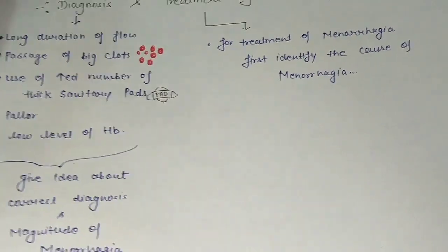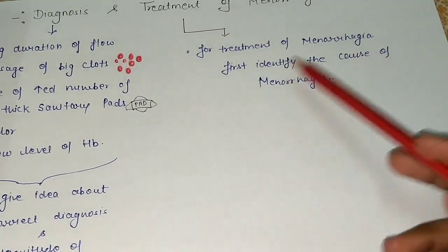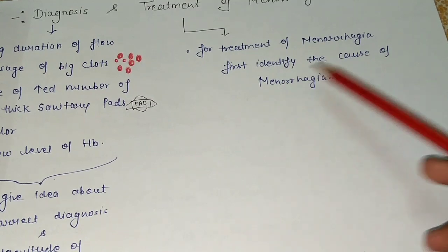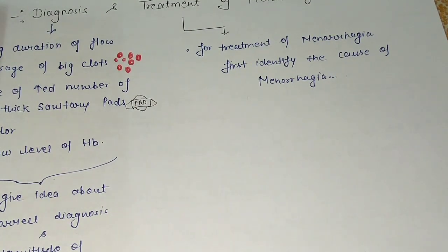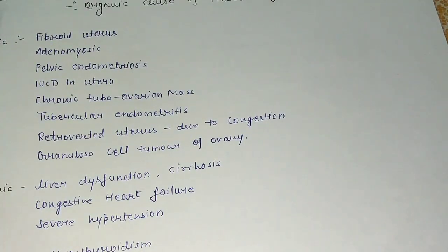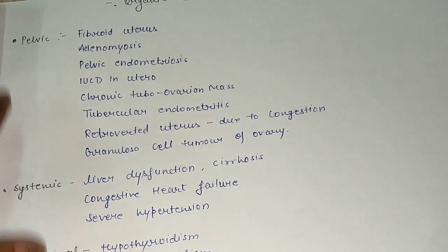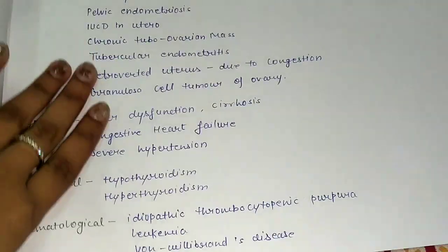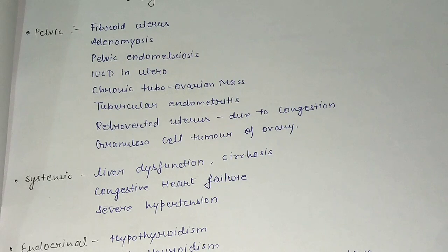For the treatment of menorrhagia, the first step is to identify the cause. Without identifying the cause, we cannot treat menorrhagia properly for the patient. We need to find out which cause is responsible before deciding on further management.